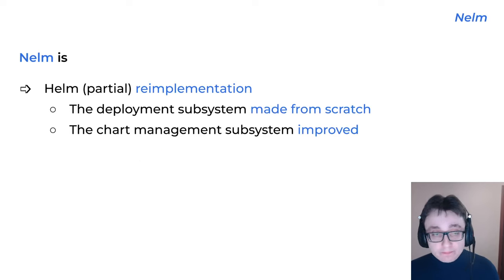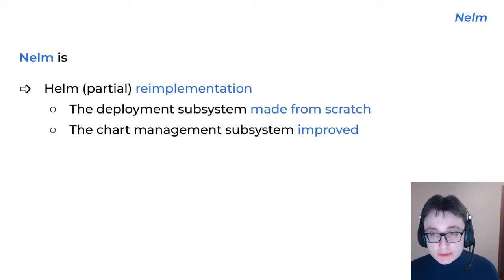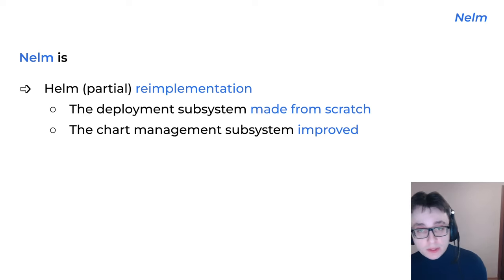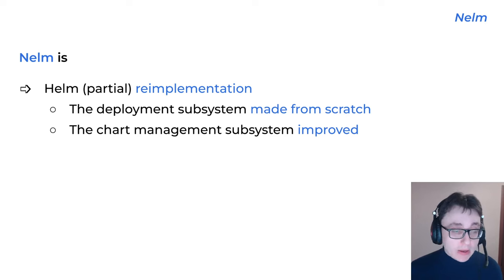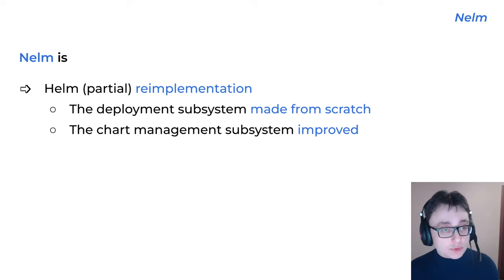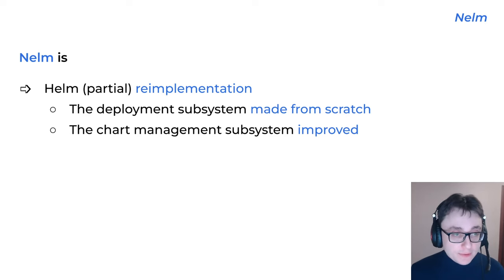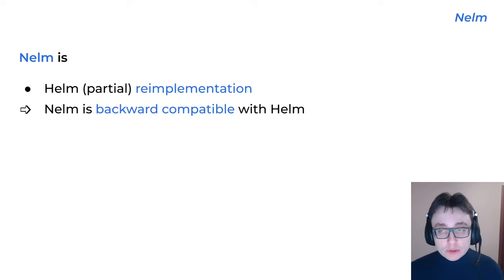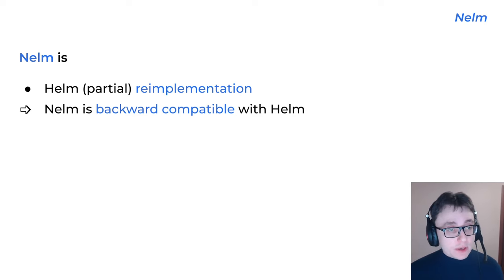What is Nelm? Nelm is a partial re-implementation of Helm. Helm basically consists of two main component parts. The first is the deployment subsystem and the second is the chart management and rendering subsystem. The first part — the deployment subsystem — we basically made from scratch, but in a backwards-compatible manner with Helm, so that you can deploy all the same Helm charts without needing to change or rewrite them. For the second part, the chart management subsystem, we improved it and are continuing to improve it. Nelm is backwards compatible with Helm and with Werf.